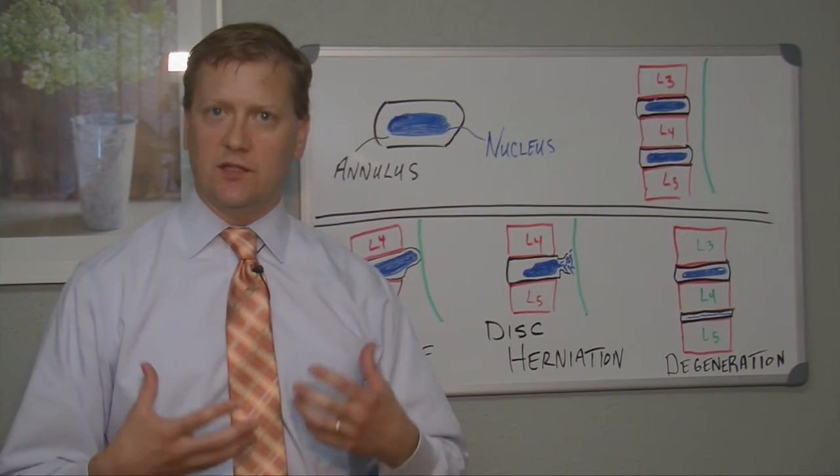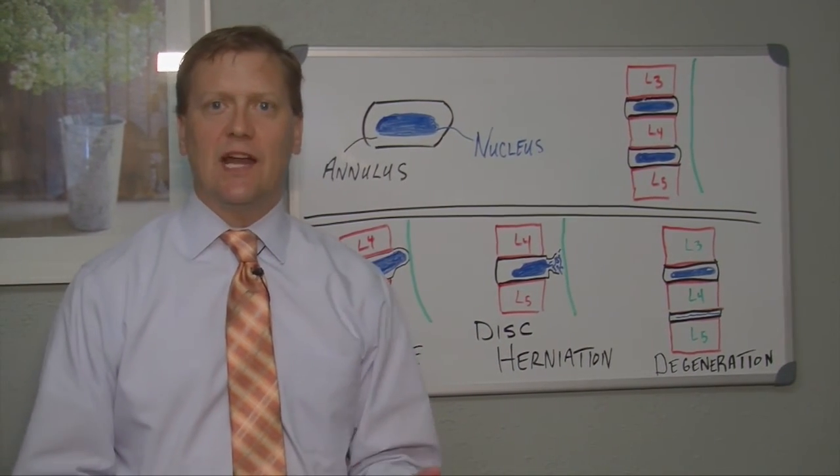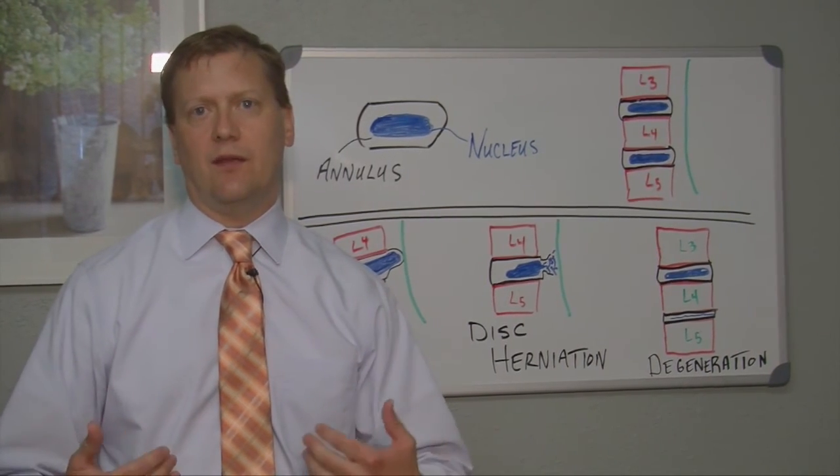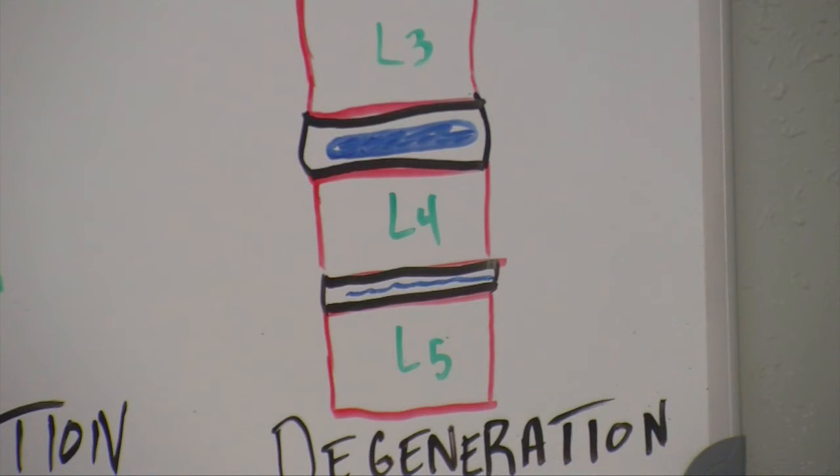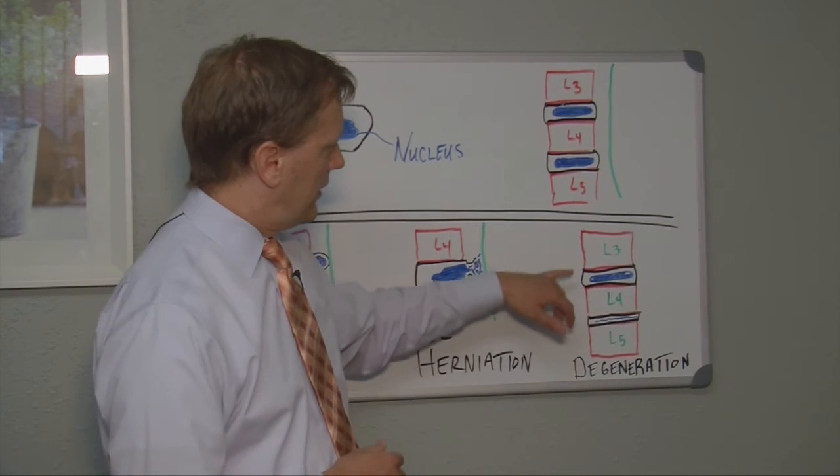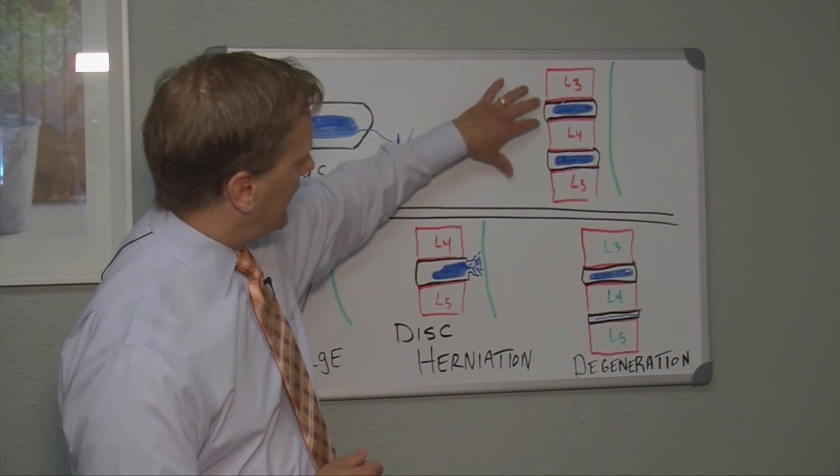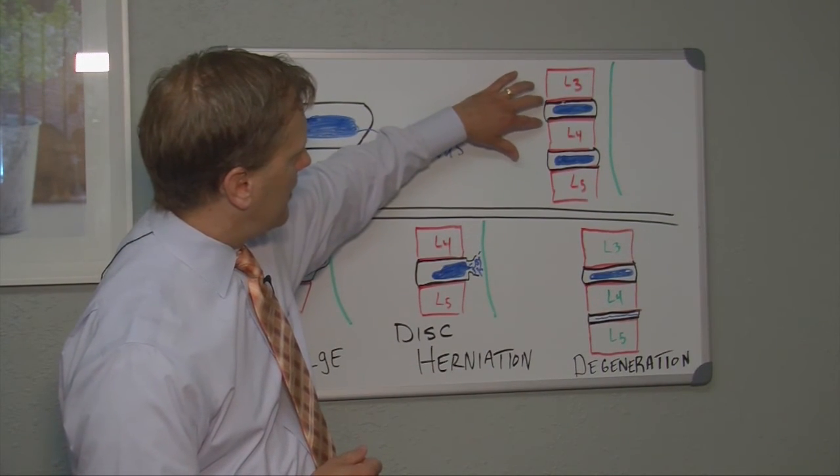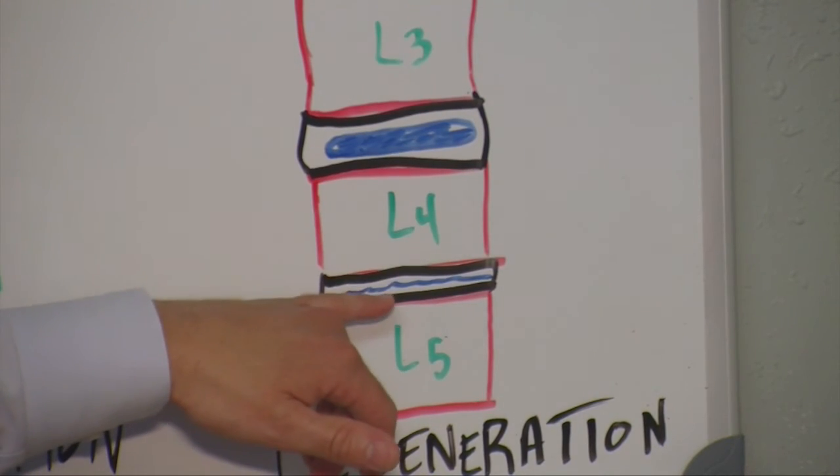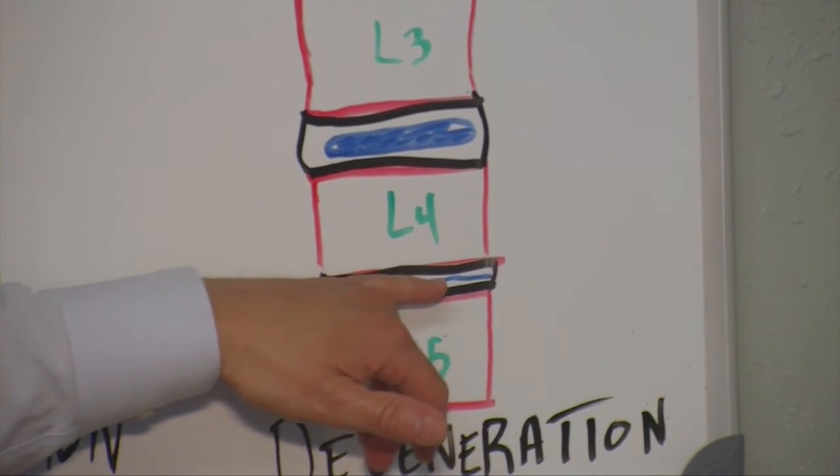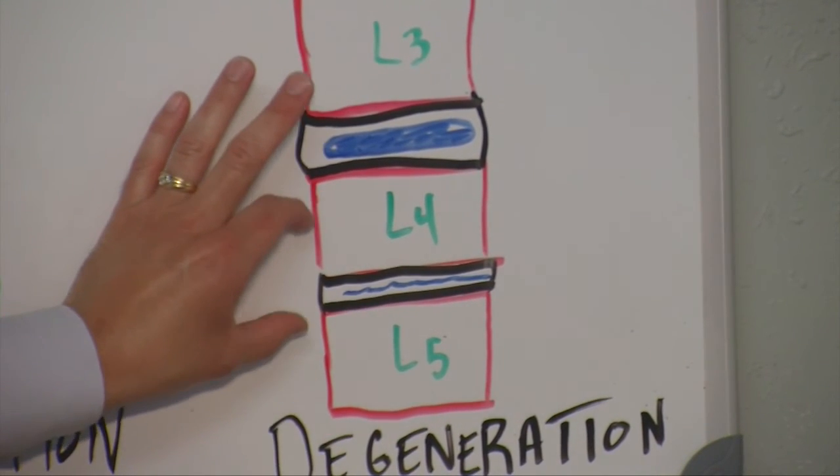What it means is that the disc actually starts to lose its fluid. It's a very natural process—it's going to happen to all of us. All of our discs are going to lose fluid. So this picture is depicting a degenerative disc. In the normal setting, you've got a nice thick disc with a lot of fluid.